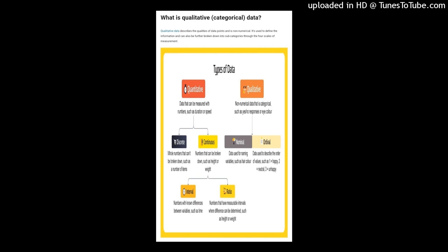Examples of discrete data include the number of pets someone has — one had two dogs, but not two and a half dogs. The number of wins a favorite team gets is also a form of discrete data, because a team can't have a half win — it's either a win, a loss, or a draw.